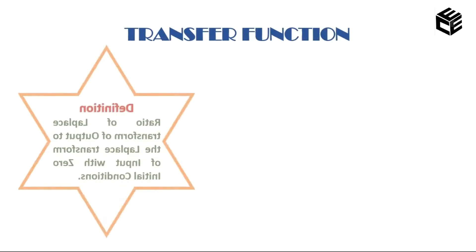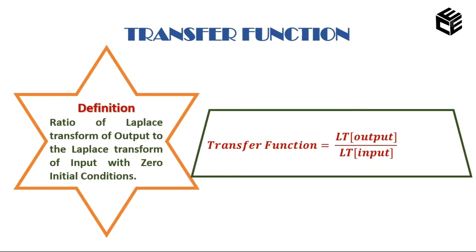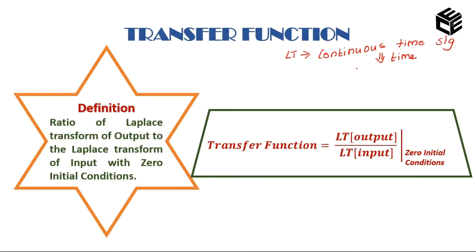First, we are going to see what is a transfer function. The transfer function is defined as the ratio of Laplace transform of output to the Laplace transform of input with zero initial conditions. Laplace transform deals with continuous time signals. A continuous time signal is a signal in the time domain. If we are giving an input signal r(t) to a system and the output we are getting is c(t), we can find the transfer function.